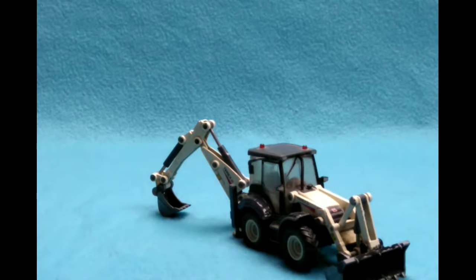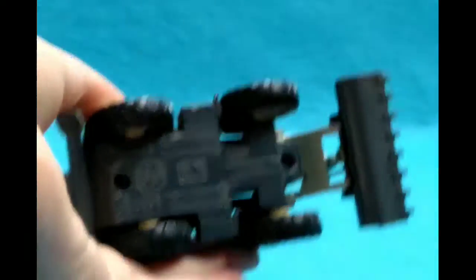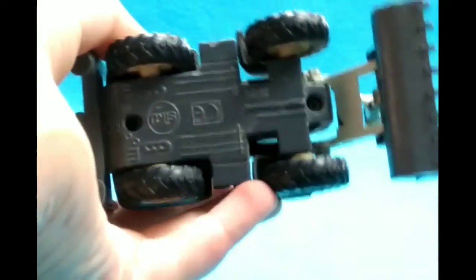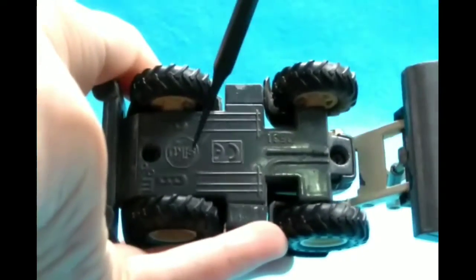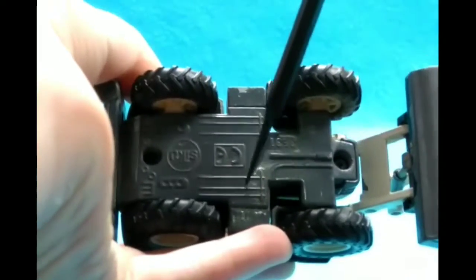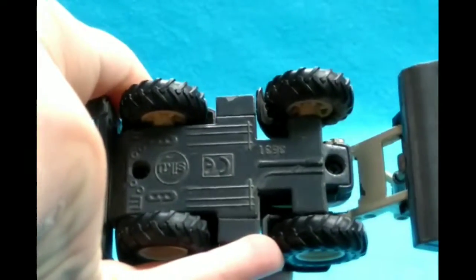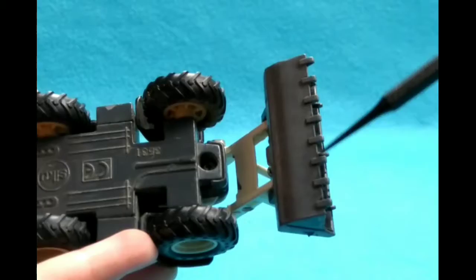I will just pick it up now. On the underneath you can see the Siku branding there and there isn't too much detail to talk about underneath, but that is what to be expected with a Siku model. The tread on the wheels looks quite nice as well.